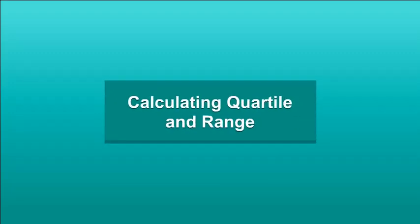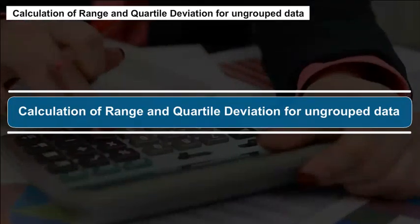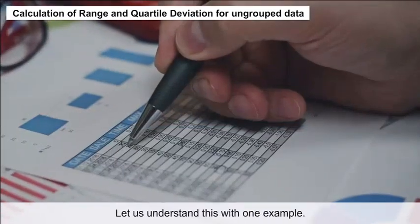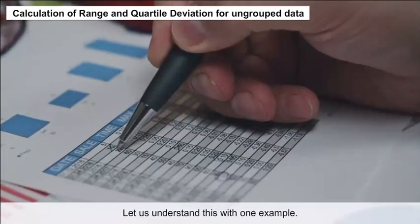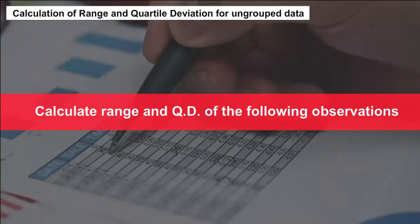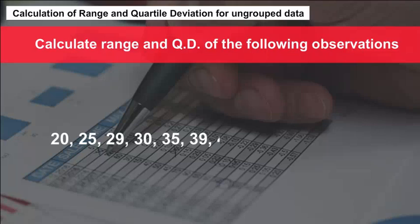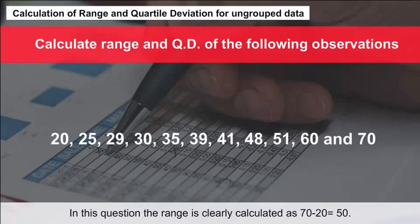Calculation of range and quartile deviation for ungrouped data. Let us understand this with one example: Calculate range and QD of the following observations — 20, 25, 29, 30, 35, 39, 41, 48, 51, 60, and 70.